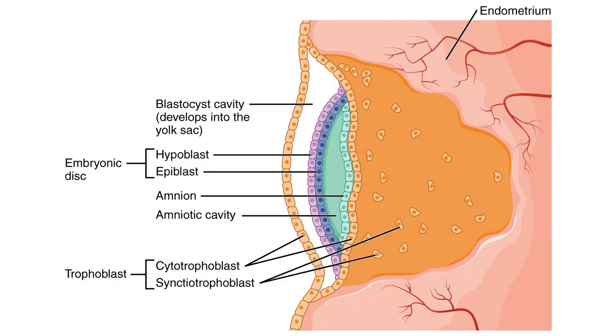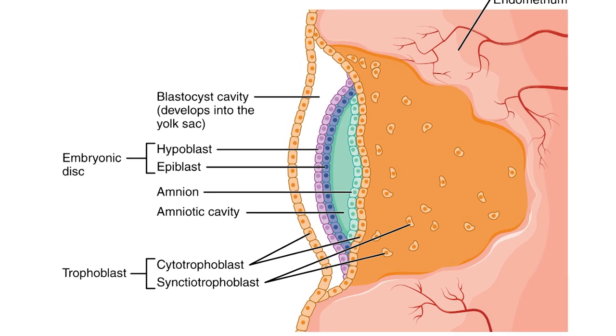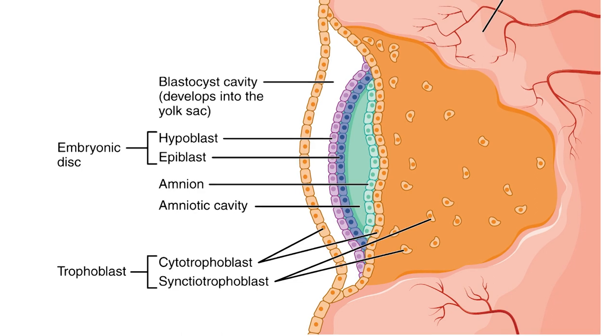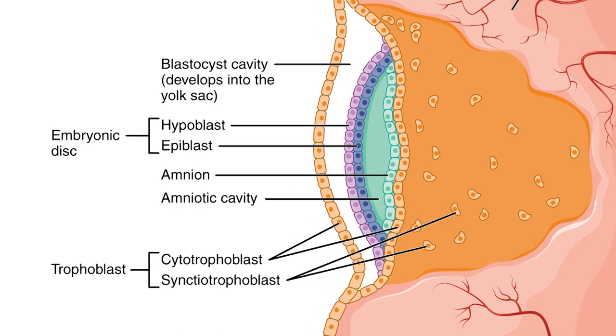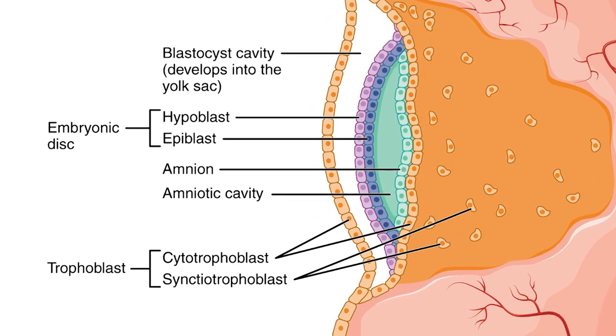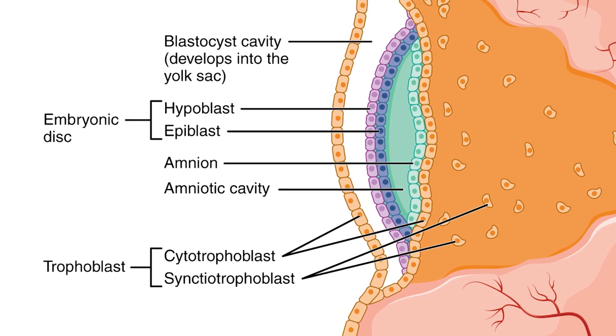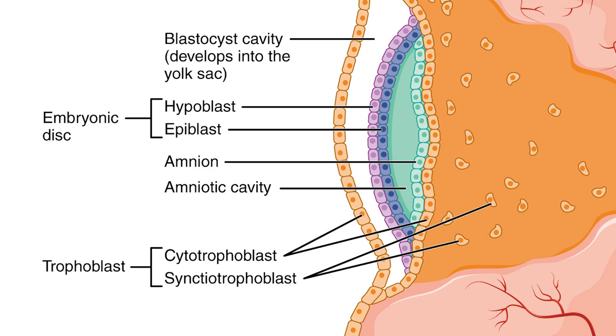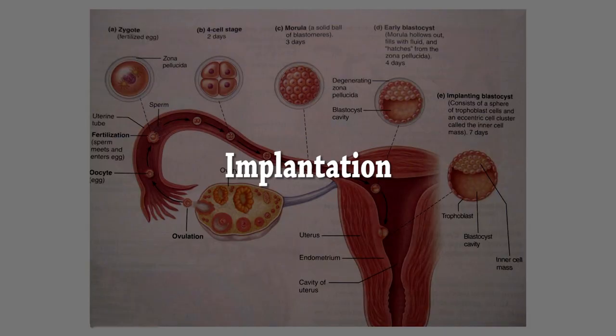The zona pellucida ultimately disappears completely, and the now-exposed cells of the trophoblast allow the blastocyst to implant itself into the endometrium — the lining on the wall of the uterus. New cells derived from the yolk sac give rise to extra-embryonic membranes, which form cavities known as the chorionic cavity.